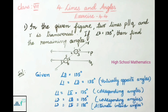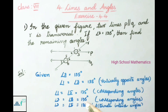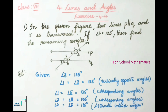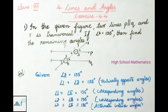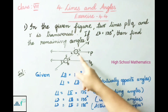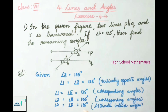Angle 3 and angle 8 are also equal because these both are corresponding angles. So angle 3 equals angle 8 equals 135 degrees. Next, angle 3 and angle 5 are also equal because these both are alternate interior angles. So angle 3 and angle 5 both equal 135 degrees.